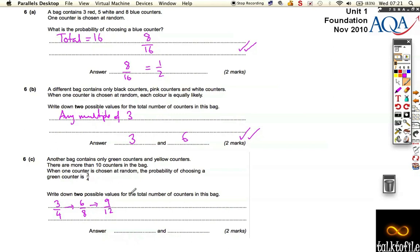And when one counter is chosen at random, so two possible values. We could have twelve things in the bag. And you could have fifteen things in the bag. And that works. You've just got to find any number, so we could keep scaling up.